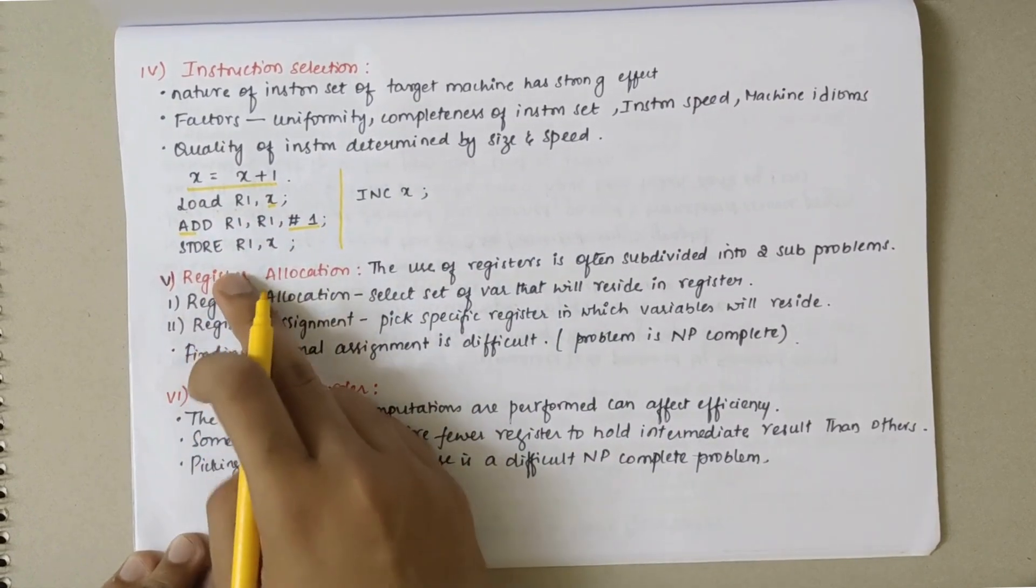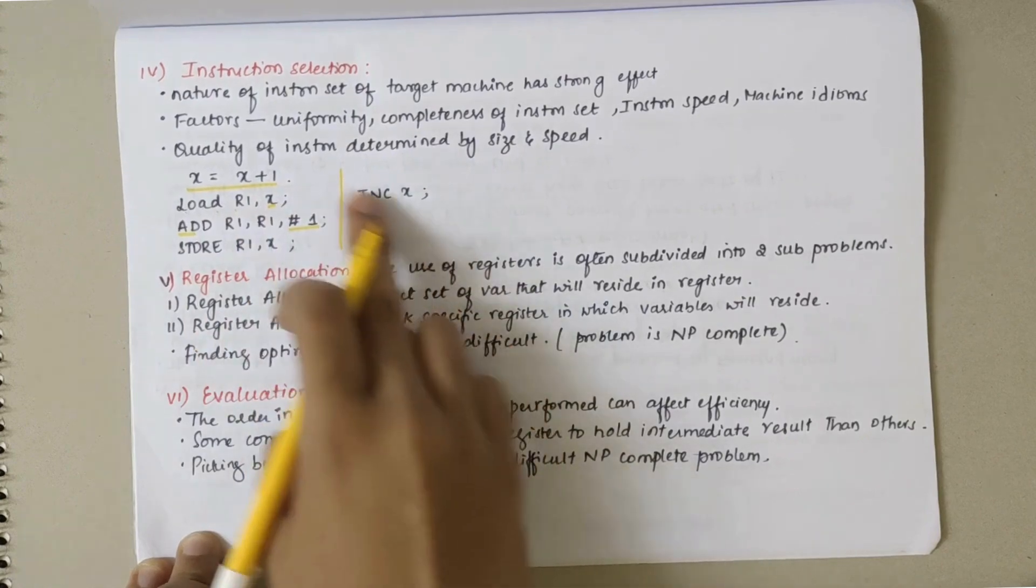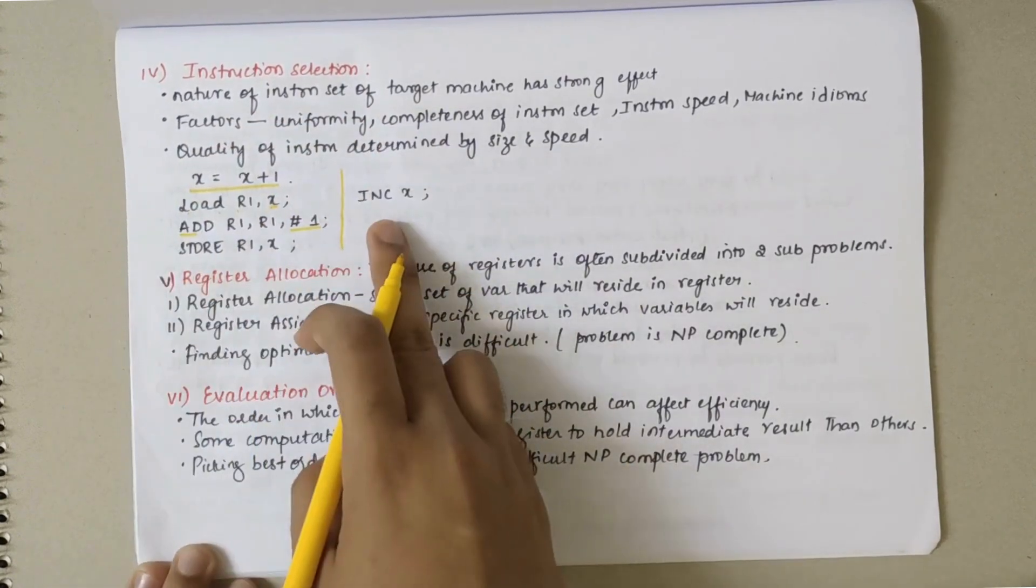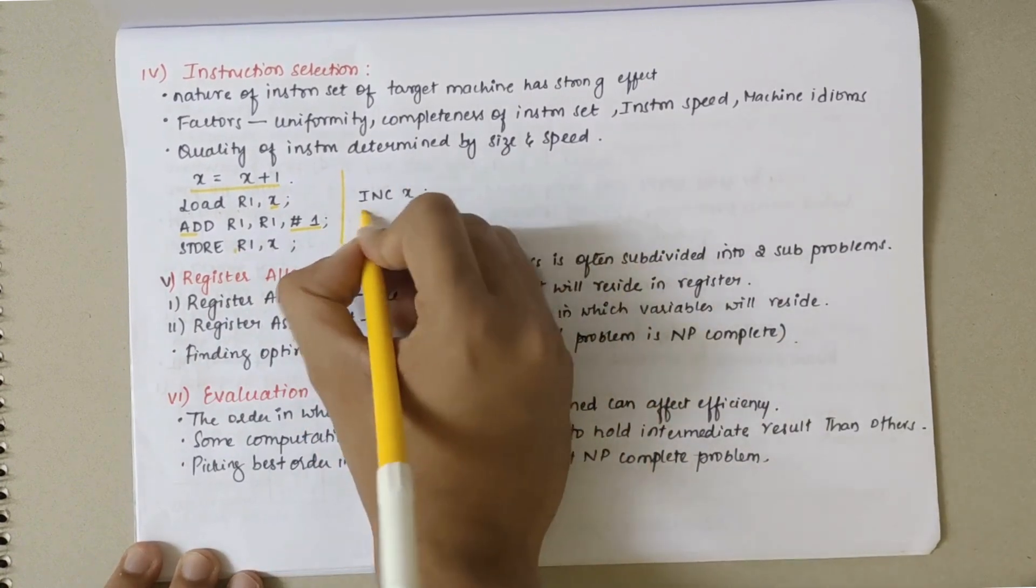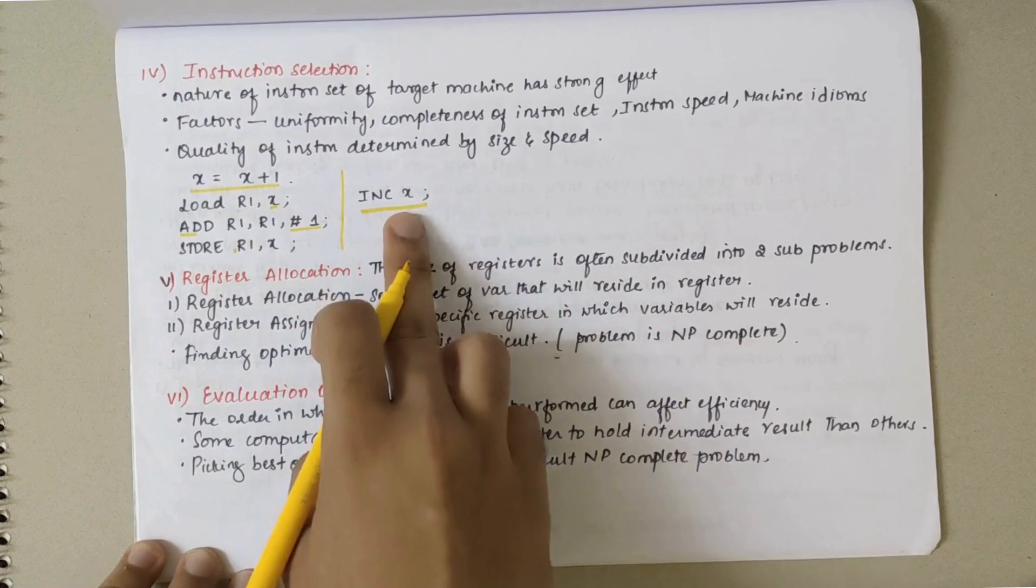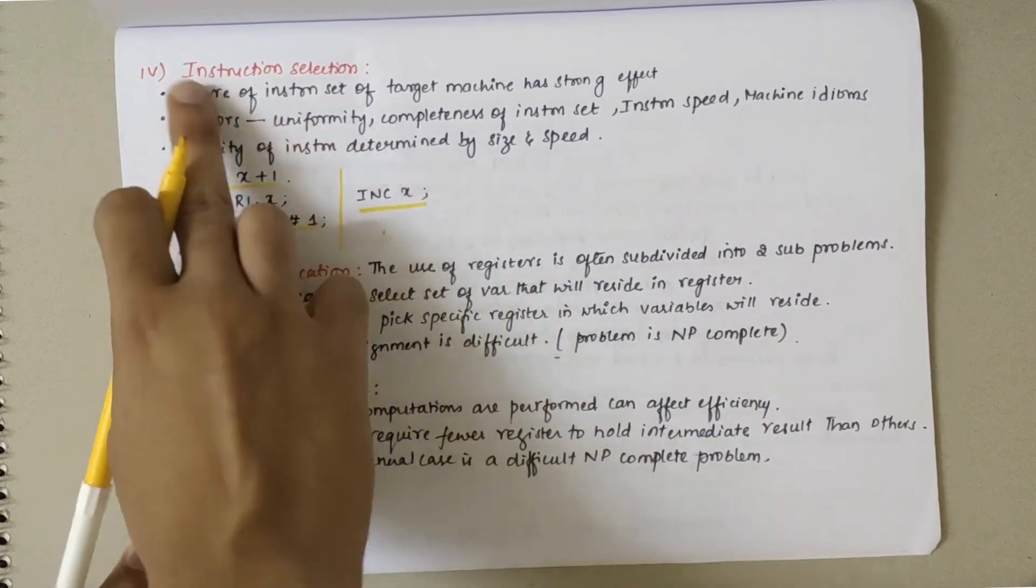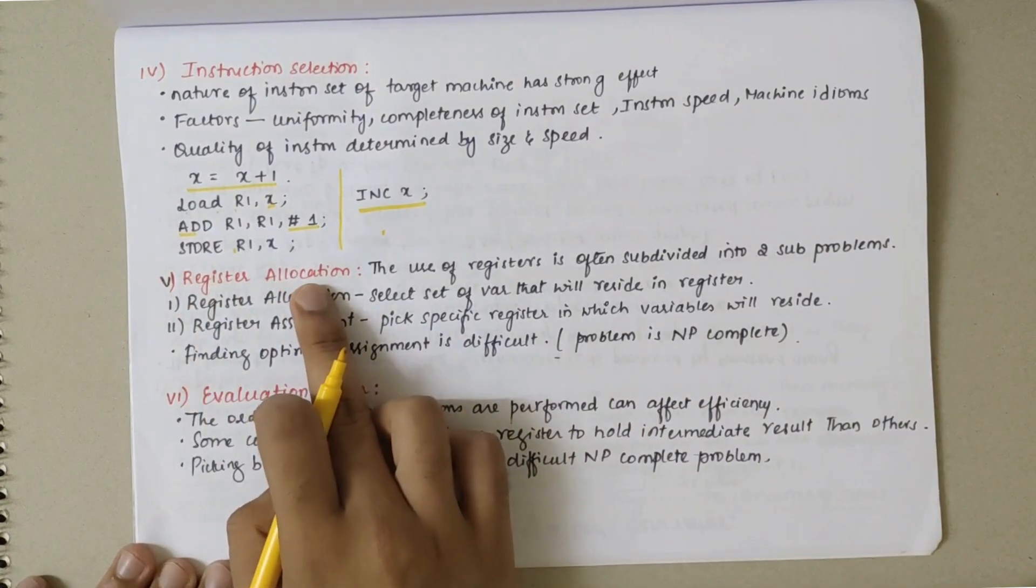Here we have three instructions, whereas we can use increment of x. When you use increment of x, x is being incremented by one. Compared to this, this instruction takes less time and it executes at a faster rate. Instruction selection plays a very important role.